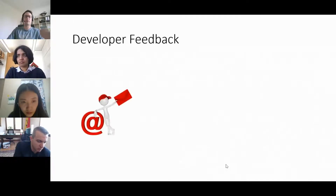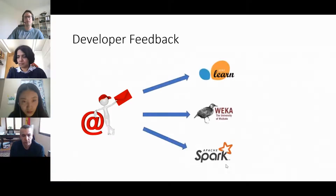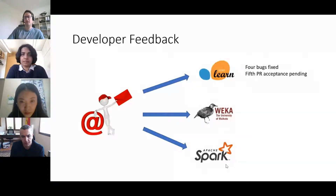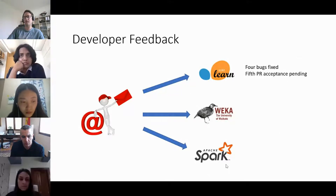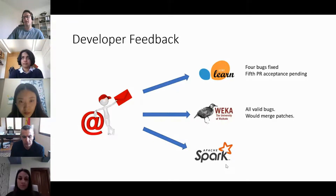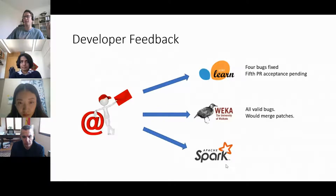Once we found bugs, we went to the developers and wrote up the issues, sending them to mailing lists or issue trackers. The developers reacted: scikit-learn has mostly fixed everything; another fix is in progress because they split it over multiple fixes. Weka said they're in deep maintenance mode — send us patches and we'll merge them, but won't do it ourselves. Apache Spark said this is a bug but such an extreme case that as a big data framework they don't care about it.